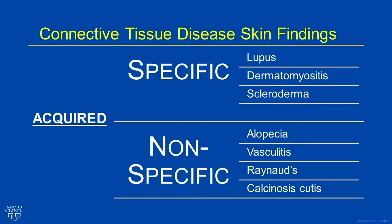I don't really have any conflicts of interest. When we think about connective tissue disease that's autoimmune, we think about the skin findings in terms of nonspecific or specific signs. For instance, someone with scleroderma could have calcinosis cutis, but also someone with dermatomyositis.